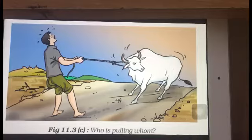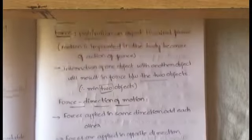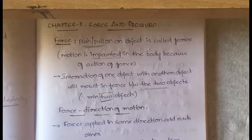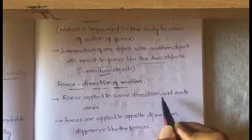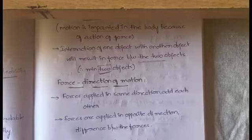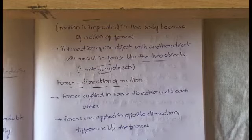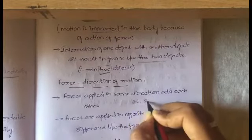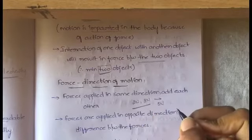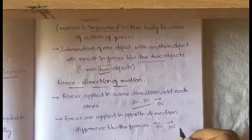Now let's look at force and direction of motion. Force applied in the same direction will add to each other. If we apply two forces in the same direction, we add them for the total force — for example, two newtons plus three newtons equals five newtons. If forces are applied in opposite directions, we take the difference between them.